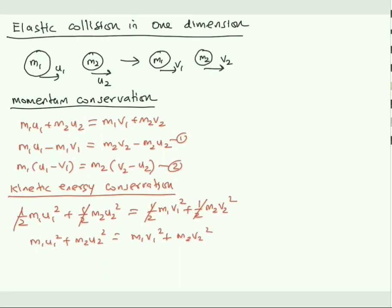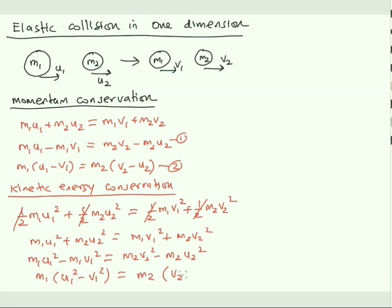Rearranging in the same manner as before, take mass one terms to one side and mass two terms to the other: m1(u1² − v1²) = m2(v2² − u2²). Call this equation three.